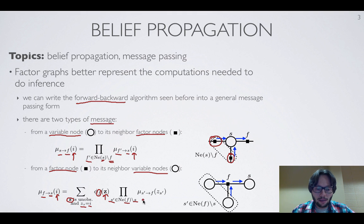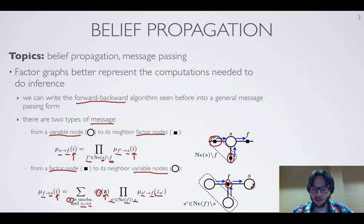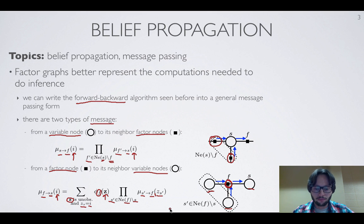We multiply all the messages that these S' nodes have sent to F, and take into account what value each S' is taking in the variables involved in the factor. Visually, the message sent from a factor to a variable node involves the messages from all other variable nodes that are not S — it's the product of these messages, weighted by the factor, then summed over all potential values those other variable nodes can take.